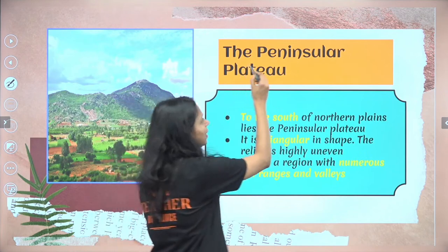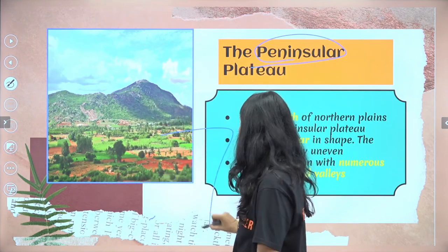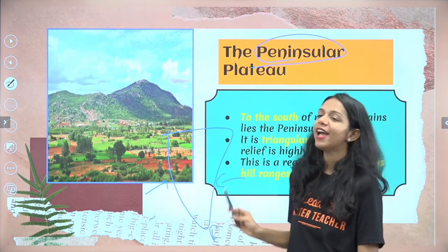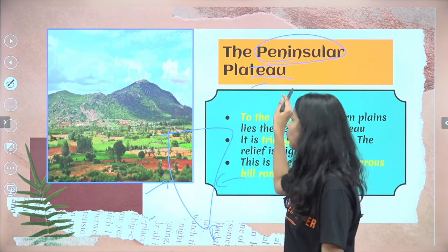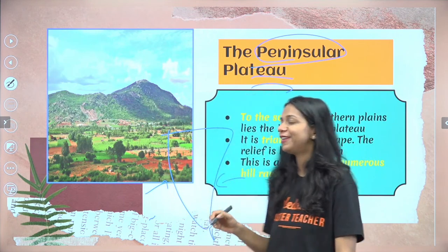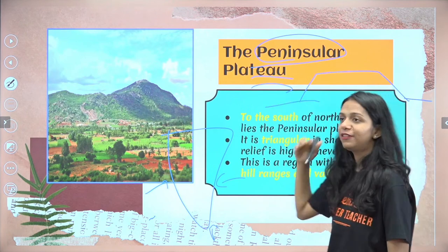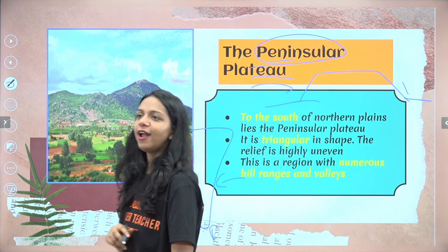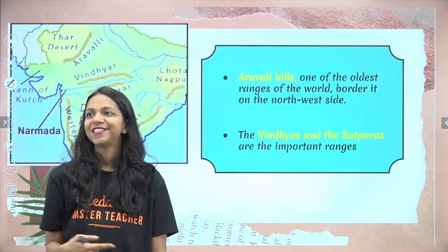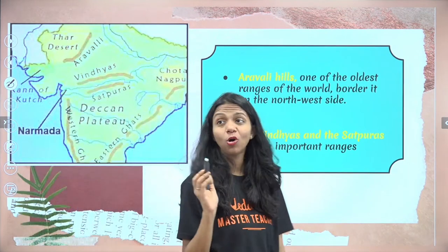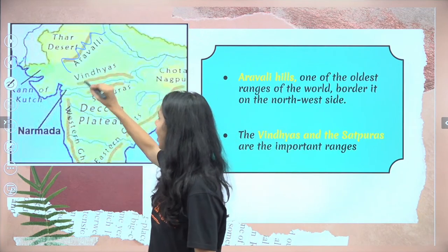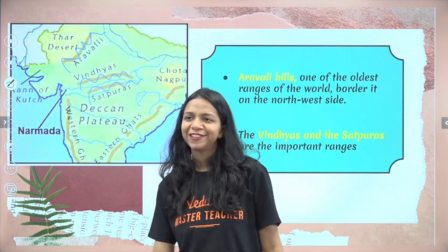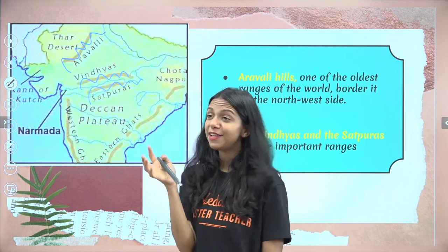Next is the Peninsular Plateau. Peninsula means a piece of land surrounded by water on three sides — the Indian Ocean, Bay of Bengal, and Arabian Sea. The southern part of India is your peninsula, and it is also a plateau — a table-top landform above sea level. To the south of the Northern Plains is this triangular peninsula surrounded by sea on three sides. Here we also have mountains like the Aravallis, the Vindhyas, and the Satpuras. The Himalayas are much taller because they are very young mountains, while these are older and hence shorter.